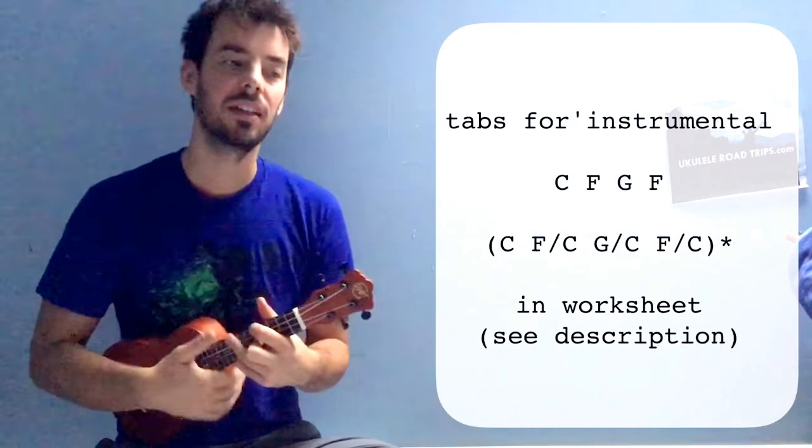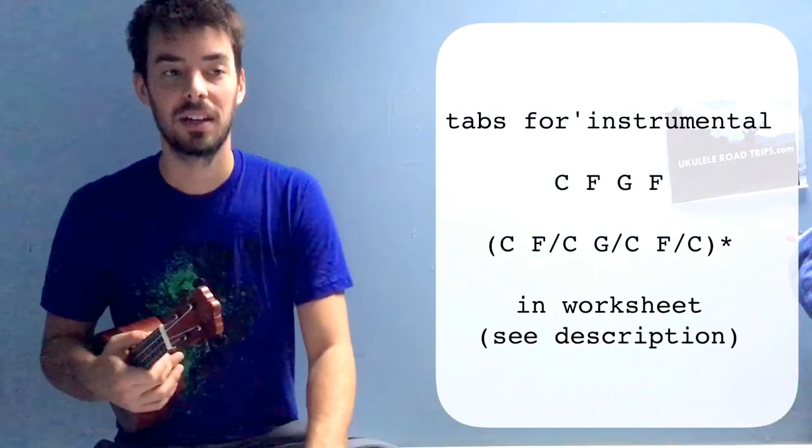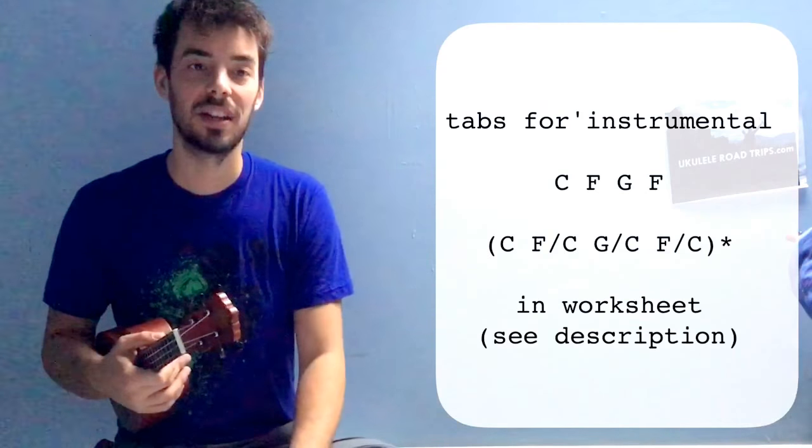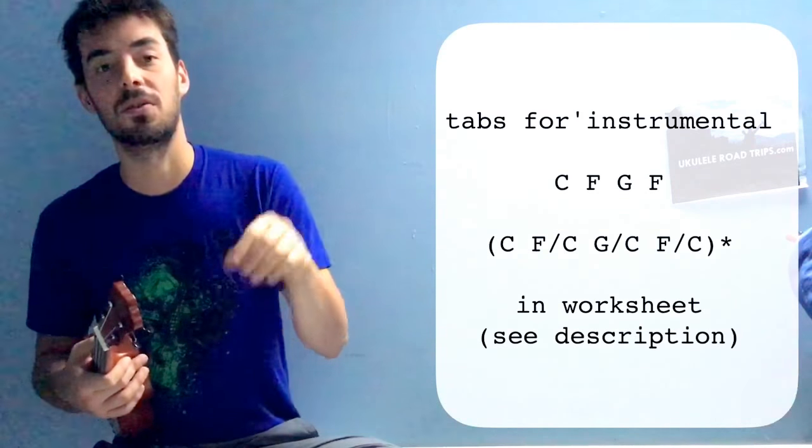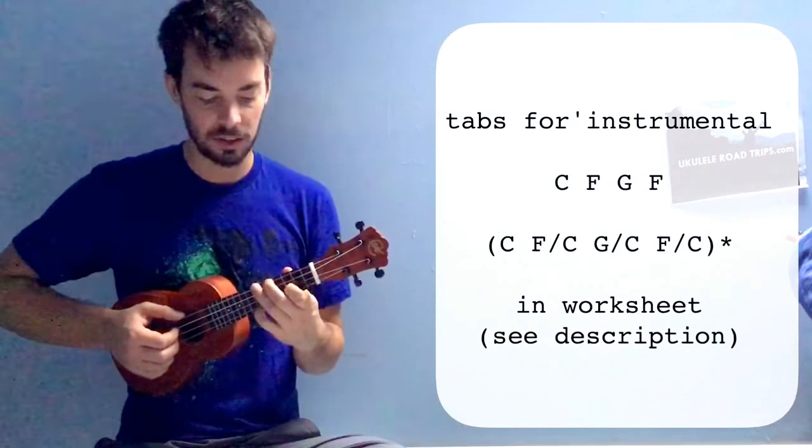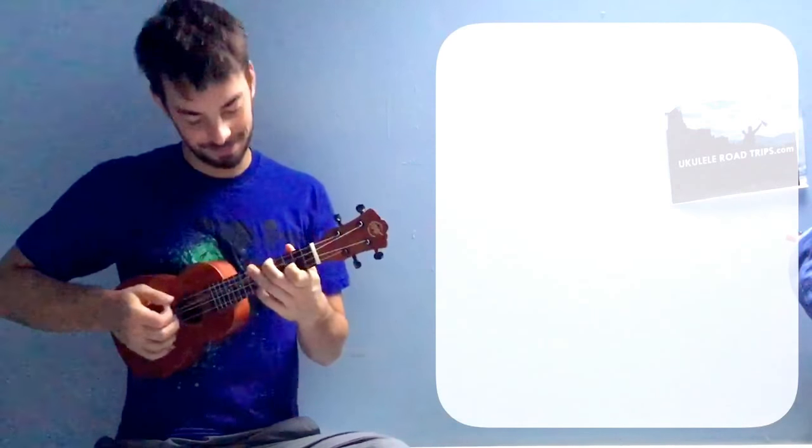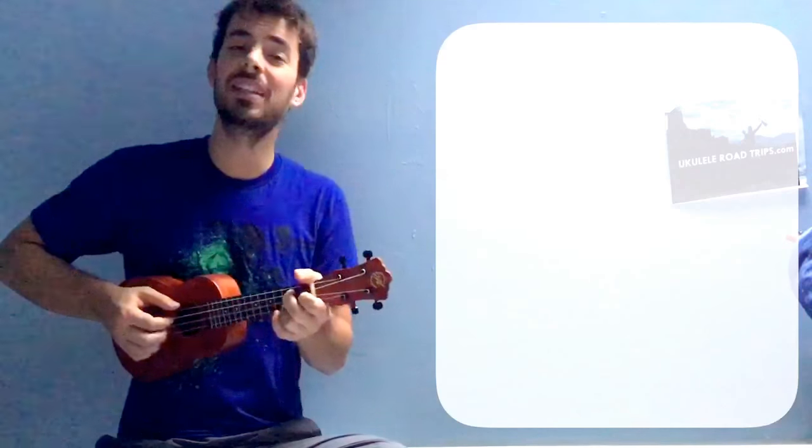Now, the particular tabs for these chords, which are very different from the ones we used to play, very easy to play but quite different, are in the document you can download with this lesson. And the strumming is going to be a little bit different also. So, instead of strumming like this, we're going to strum like this. It's a little bit funny.